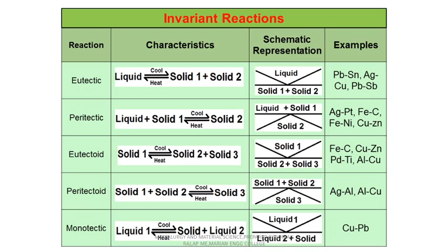Additional reactions include the eutectoid reaction, peritectoid reaction, and monotectic reactions. We just need to know what these reactions represent and the examples for each of these particular reactions.